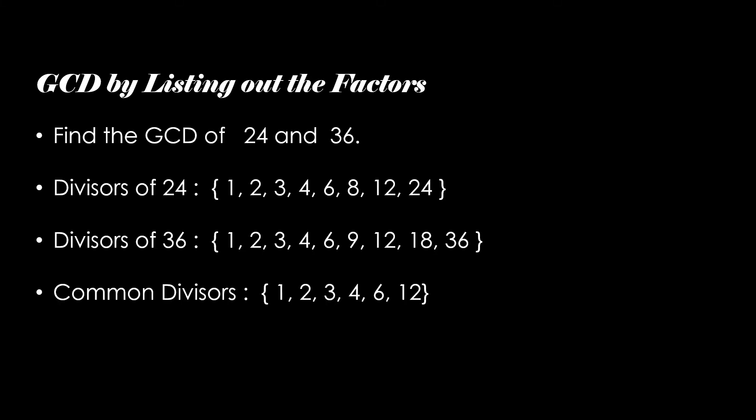So the common divisors are 1, 2, 3, 4, 6, and 12, and the greatest common divisor is 12. So the GCD of 24 and 36 is 12.